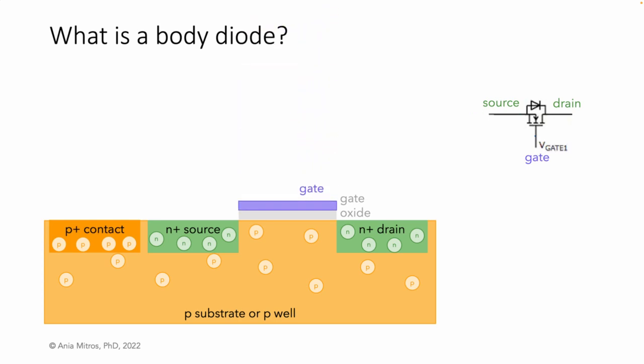The gate is made of polysilicon, which means it's made of many crystals, unlike the substrate which is grown as a single crystal. Lastly, metal traces connect to these four terminals. That's NFET manufacturing in a nutshell.